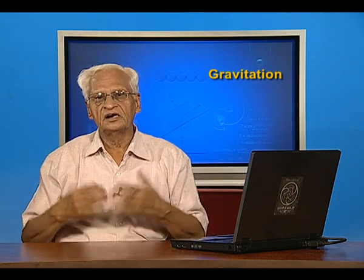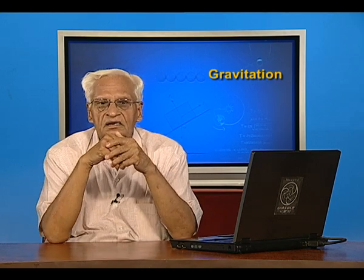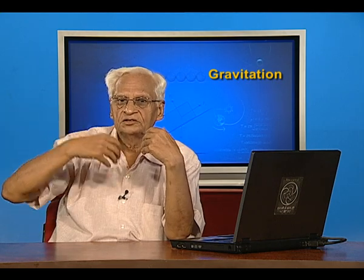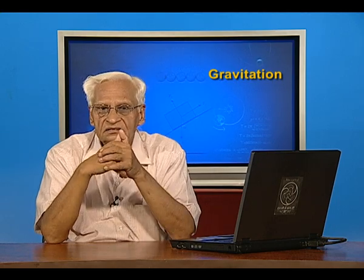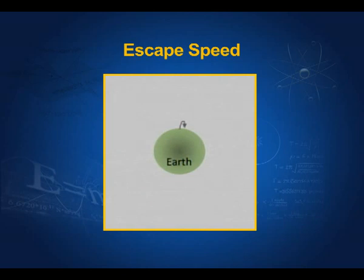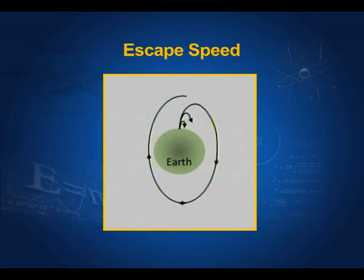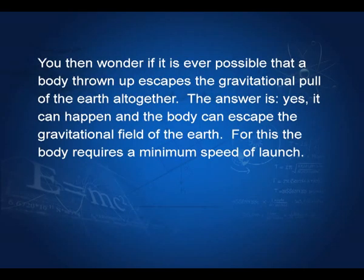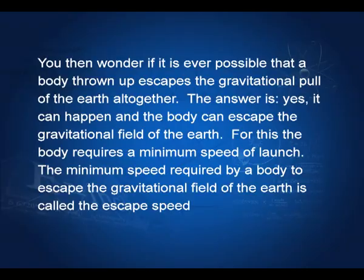Since the gravitational field always attracts particles toward the earth, is there a way to make a particle free of it? If you throw a ball up it always comes back. Throw it with higher speed — it still comes back. With still higher speed it might go into an orbit, but it remains bound to the earth. We have to give a minimum speed to the particle so that it escapes the gravitational field, and this minimum speed is called the escape speed.